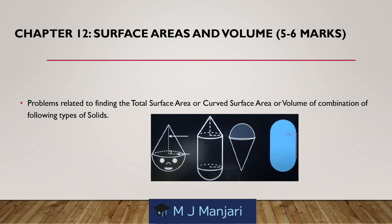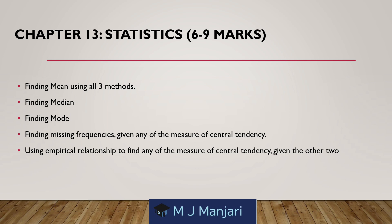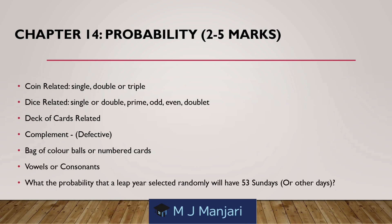Chapter 12: Surface Area and Volume — weightage 5 to 6 marks. Problems related to finding the total surface area, curved surface area, or volume of a combination of solids as shown in figures. Chapter 13: Statistics — weightage 6 to 9 marks. Topics: finding mean using all three methods; finding median; finding mode; finding missing frequency given any of the measures of central tendency; and using the empirical relation to find any measure of central tendency given the other two.